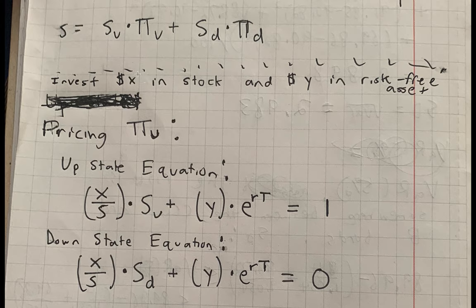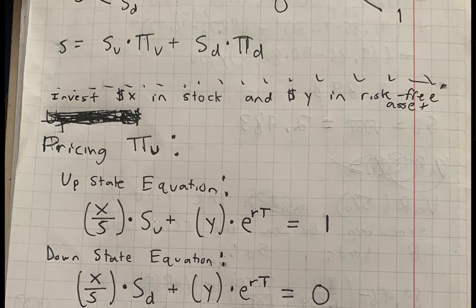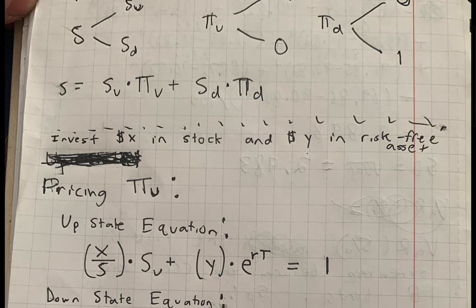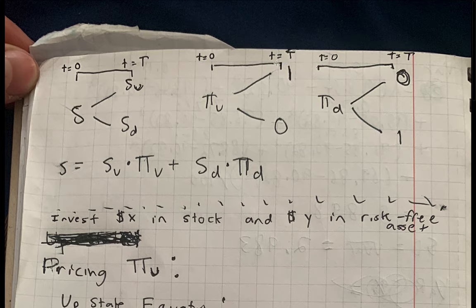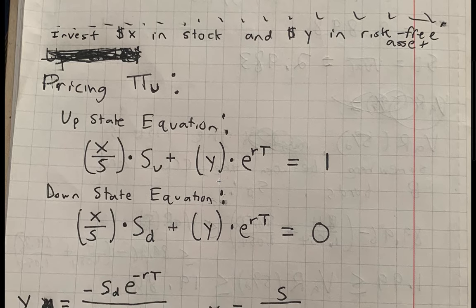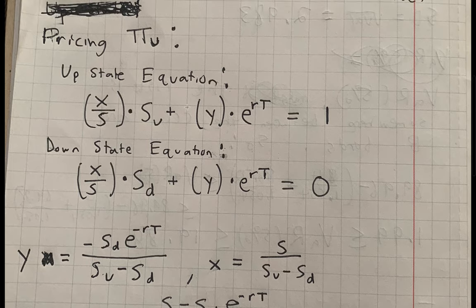In the up state, the stock goes to s_u, so we get s_u times the number of units held. We also add y times e to the rT, since the risk-free asset always appreciates by e^{rT}. We want this to equal one, matching the up state payoff of π_u. We set up the same equation for the down state equaling zero. Now we have two equations with two unknowns, x and y — everything else is a constant — so we can solve for them.